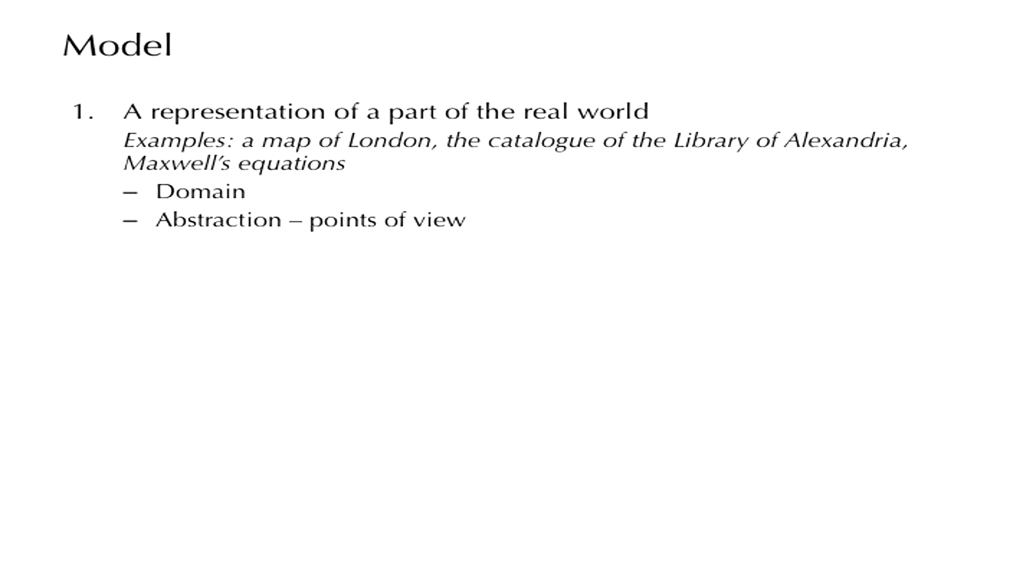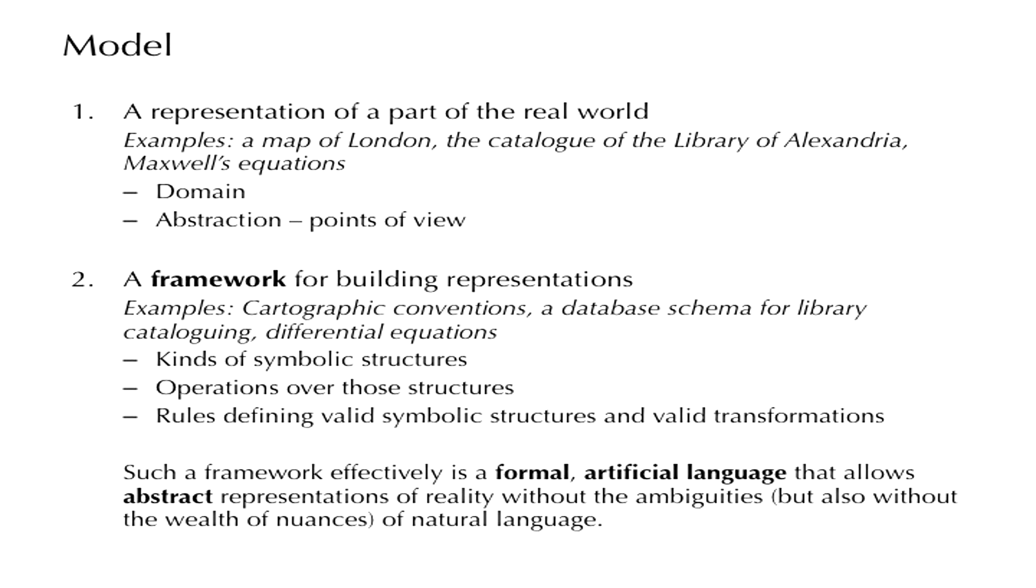So a model is an abstract representation of the world, and in fact, in the examples we saw before, such as the MDA object card, we do have an abstract representation of objects, because we select exactly what information to keep about them. But then there's also another meaning to the word model. By model, we also mean the framework that we use in order to build such abstract representations, a template or the recipe that we abide by in order to produce such presentations. And in fact, the MDA card we saw before is such a model. When we fill in the details describing any particular object, we get a description of that particular object. So for example, cartographic conventions is the framework for making maps. A database schema for library cataloging is the framework for developing the catalog of the library of Alexandria. Differential equations is the framework in which Maxwell's equations are formulated.